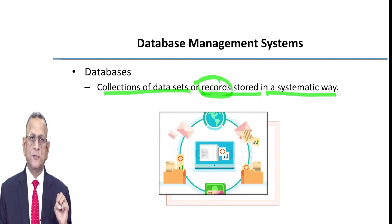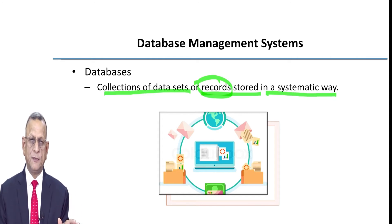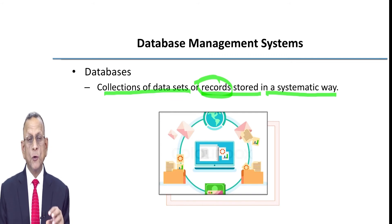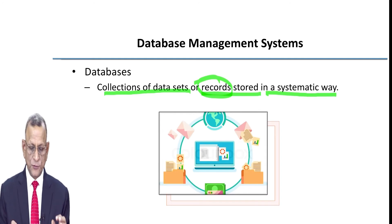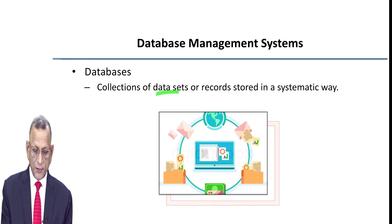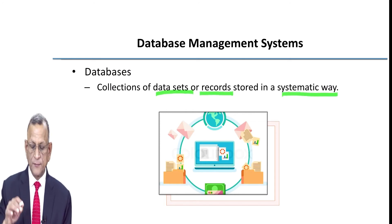A group of records will become a file. All the students being recorded together form a file containing records of all students of the class. A group of related files is known as a database. So, a database is a collection of data sets or records stored in a systematic way.